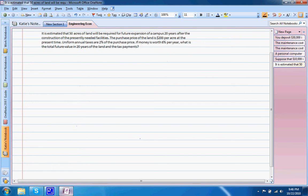I'll go ahead and read through the question and try to explain the significance of this type of question as well. So it's estimated that 50 acres of land will be required for future expansion of a campus 20 years after the construction of the presently needed facilities. The purchase price of the land is $200 per acre at the present time. Uniform annual taxes are 2% of the purchase price. If money is worth 6% per year, what is the total future value in 20 years of the land and tax payments?